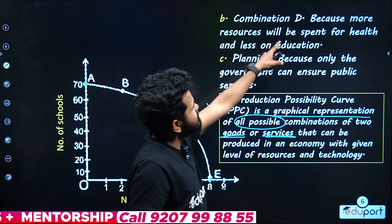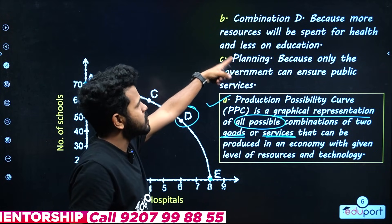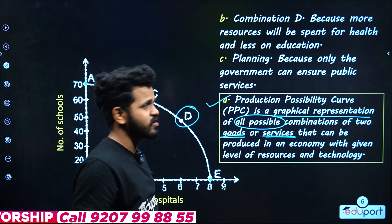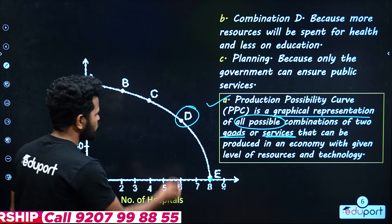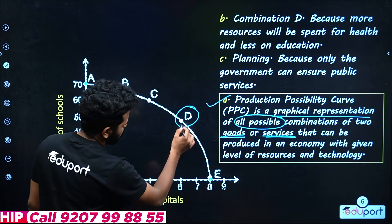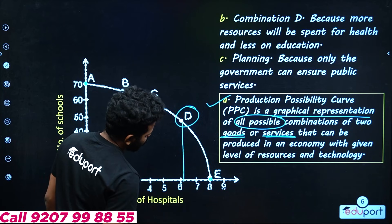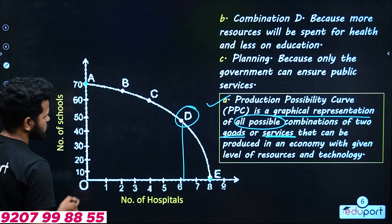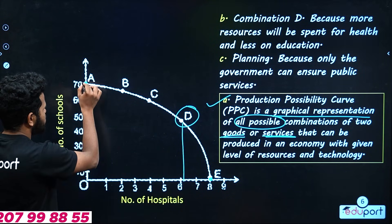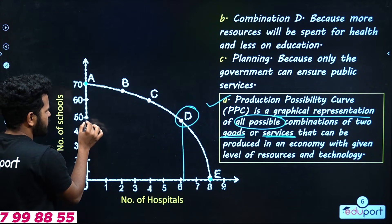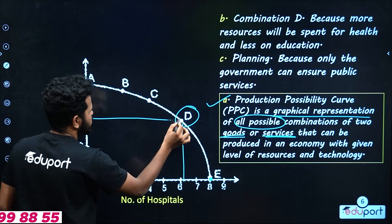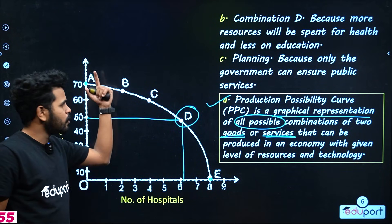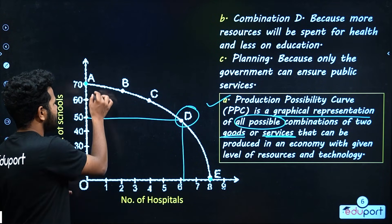Combination D — because more resources will be spent on health and less on education. You have to get to the place around the number of hospitals, and we have the job in the second level of education.